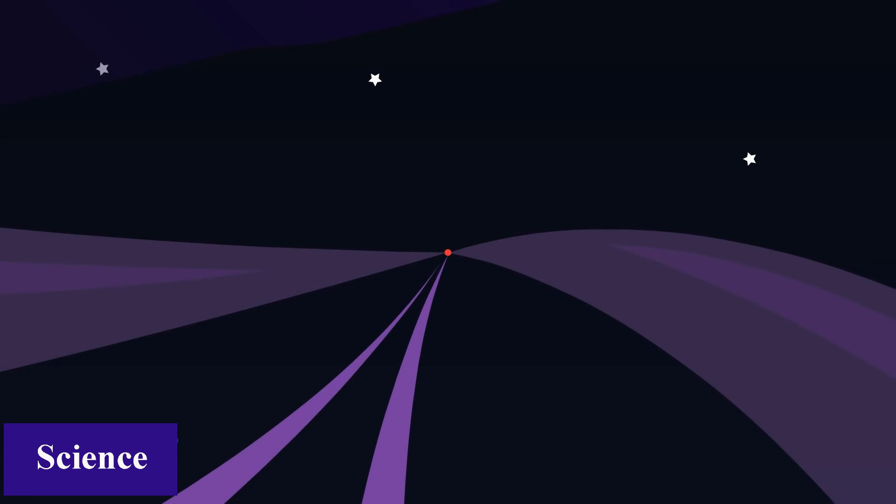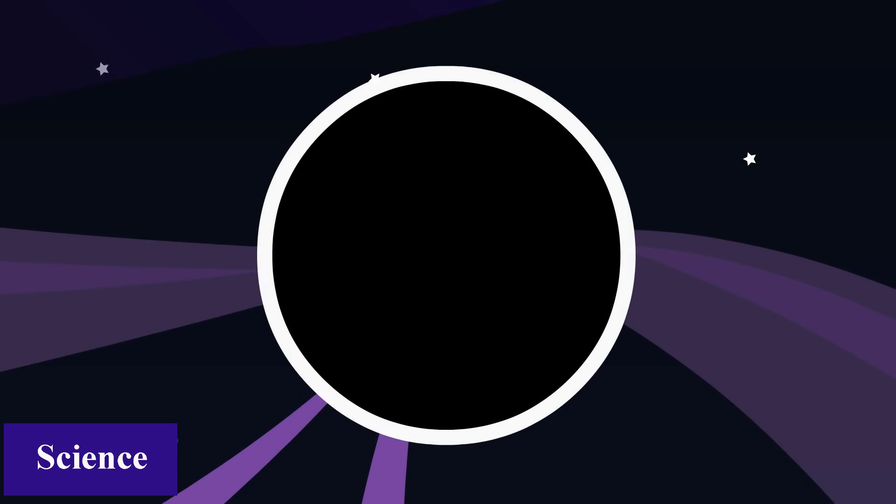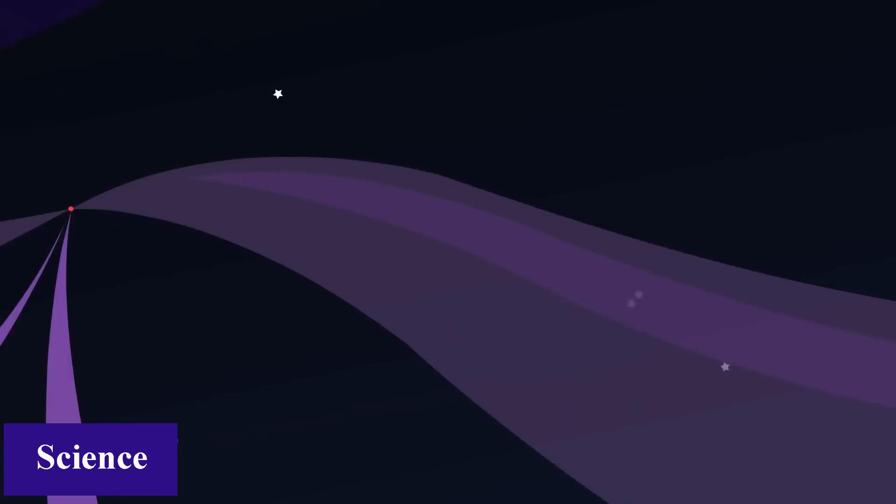Imagine a circle with a singularity in the middle. The gravity on the inside of the circle is so strong that nothing can escape. It sucks in everything, even light. That's why it's black.